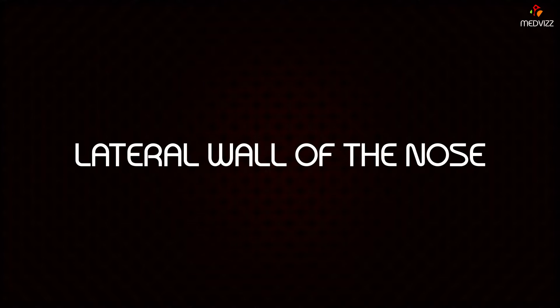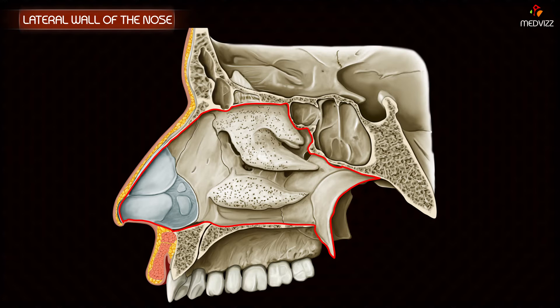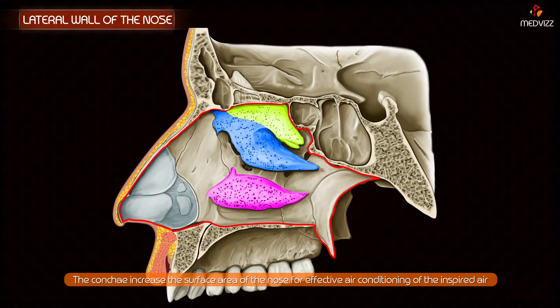The lateral wall of the nose is irregular due to the presence of three shelf-like bony projections called conchae. The conchae increase the surface area of the nose for effective air conditioning of the inspired air.